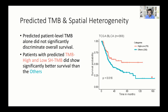How does this affect survival? When we tried looking at survival using only the TMB-predicted value alone, we didn't see a survival difference. However, when we consider the spatial heterogeneity of TMB together with tumor mutation burden, we see that low heterogeneity, high predicted patients had significantly better survival than the rest.